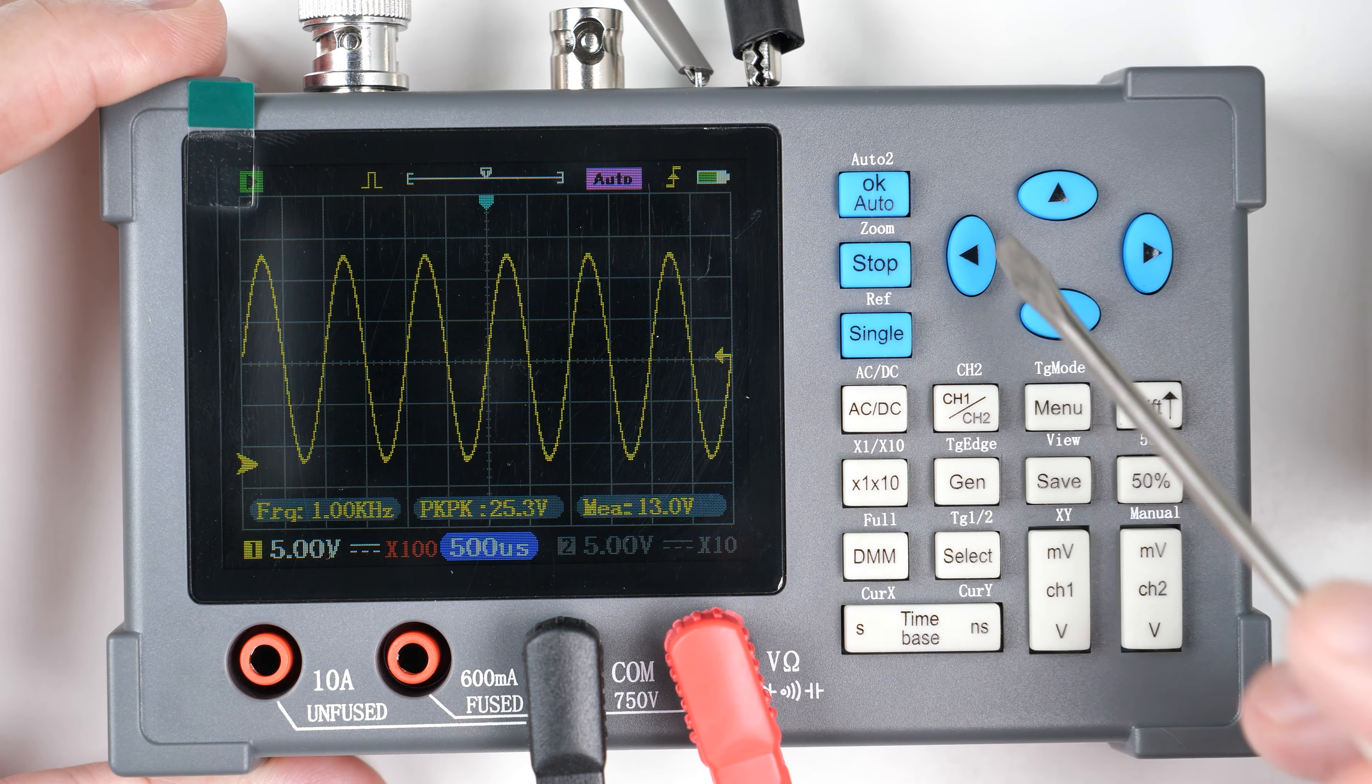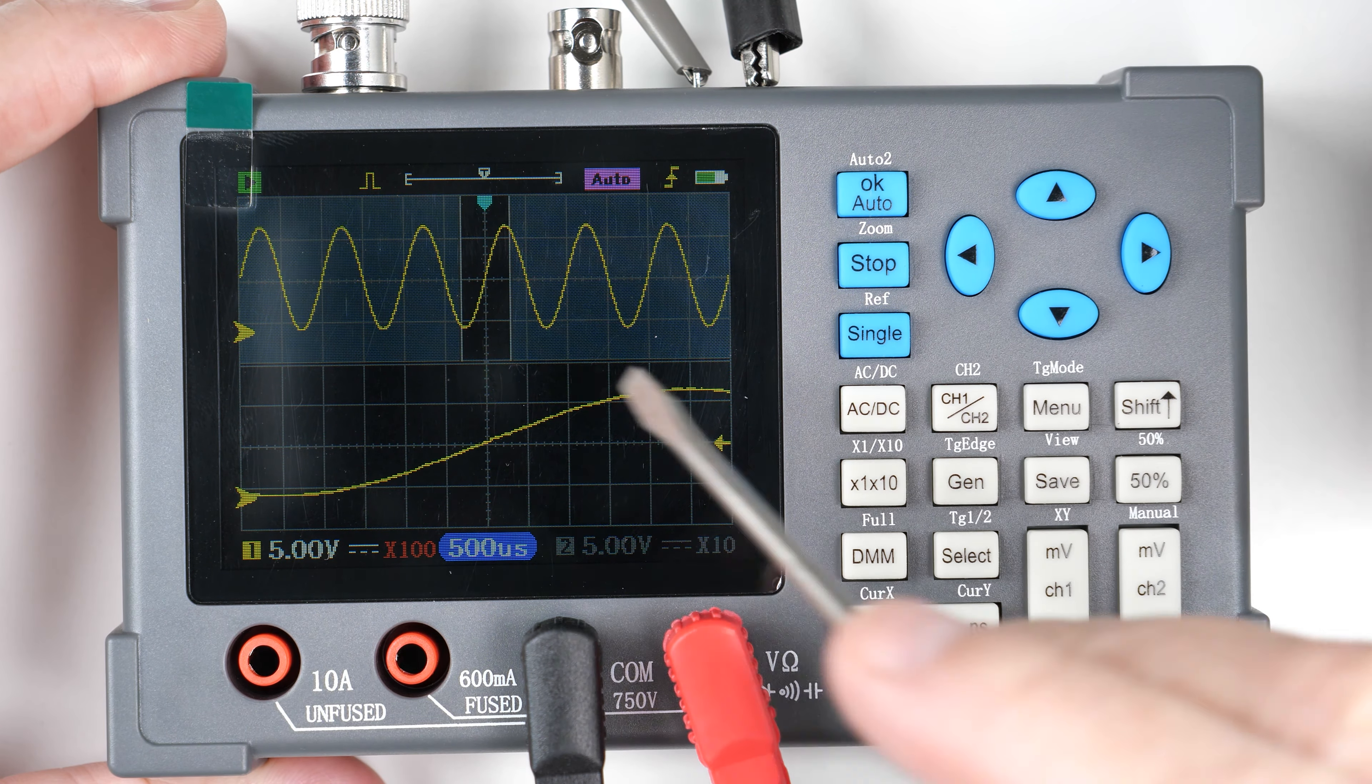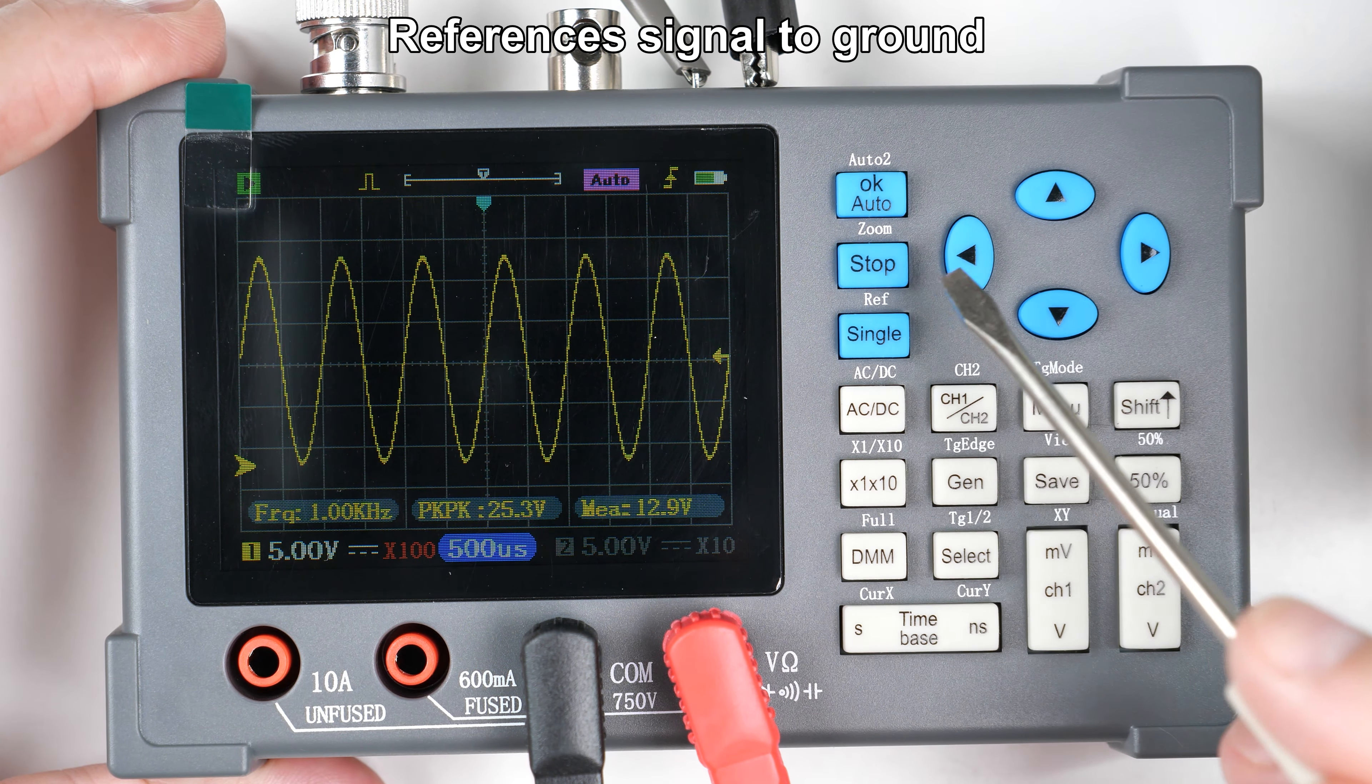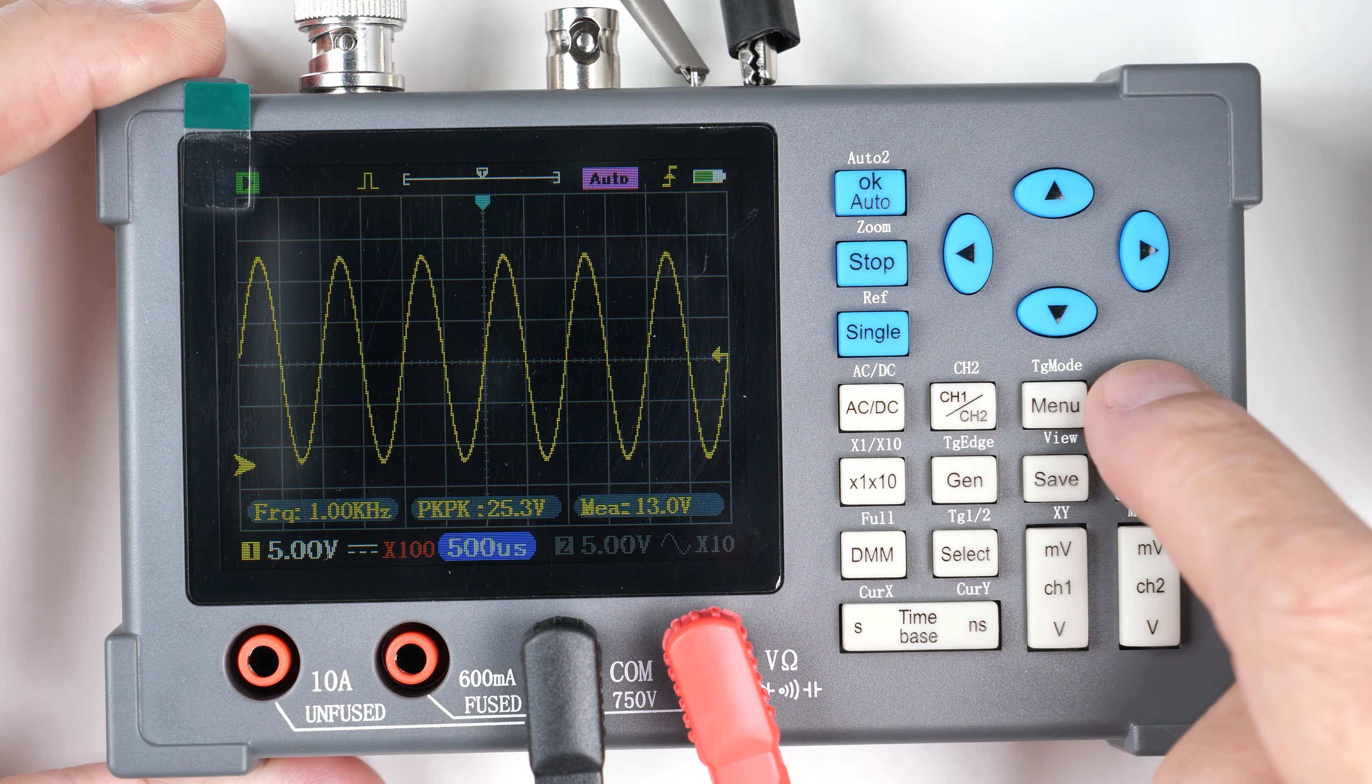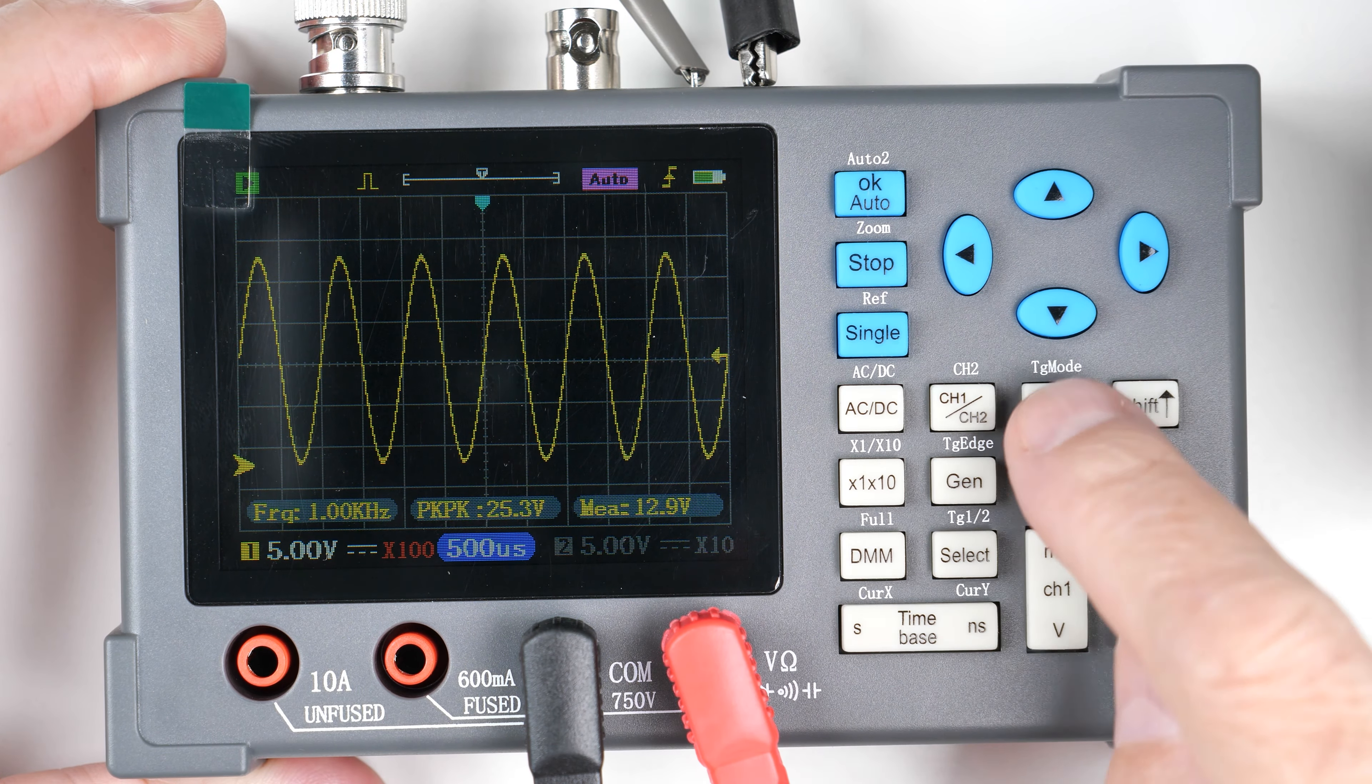It has a shift, so you can go to auto on the second. Shift will zoom, so we can do that, show you the zoom function. Unzoom. Don't remember what ref is. I'll have to look that up later. Then, of course, AC and DC. So it's on AC, DC. Channel 1, Channel 2. And again, Channel 2 is off right now.